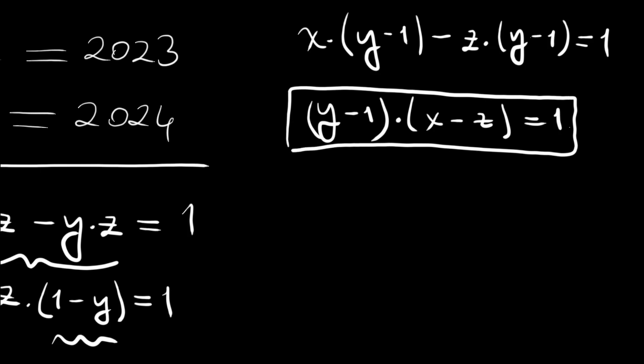Since we have a product equal to 1, we have two possibilities: either (y minus 1) equals 1 and (x minus z) equals 1, or (y minus 1) equals minus 1 and (x minus z) equals minus 1. Let's begin with the first possibility: if y minus 1 equals 1, then y equals 2.